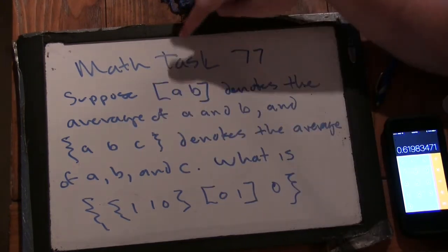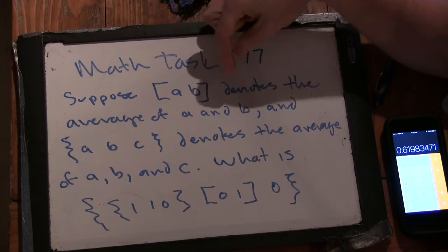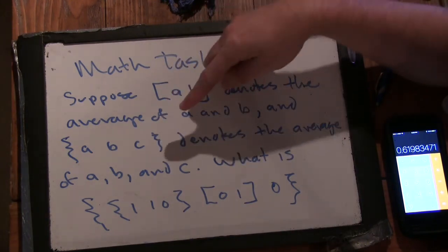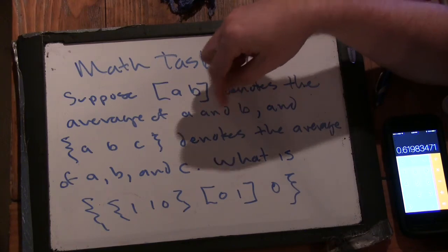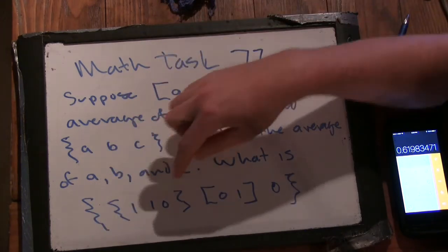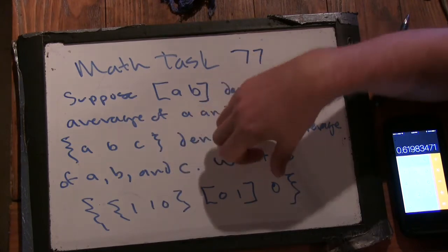Suppose square brackets A, B denotes the average of A and B, and curly brackets A, B, C denotes the average of A, B, and C. What is curly brackets 1, 1, 0, square brackets 0, 1, and 0?